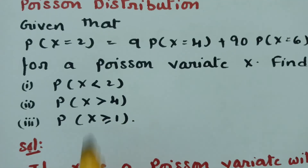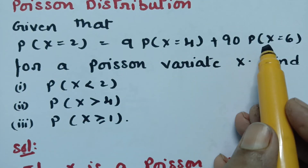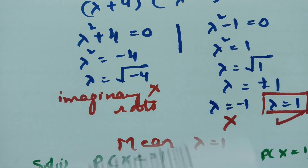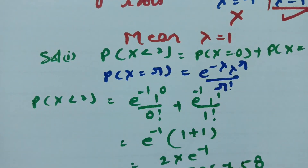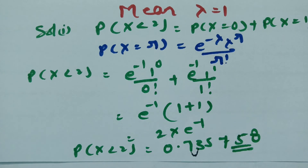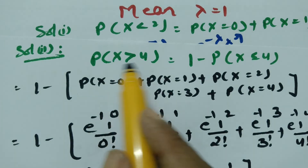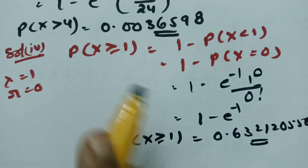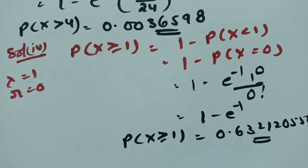To summarize: first we used the given equation to find lambda equals 1. Then for x less than 2, the probability is 0.735758; for x greater than 4, the probability is 0.0036598; and for x greater than or equal to 1, the probability is 0.632120. Thank you for watching — please practice and share with your friends.